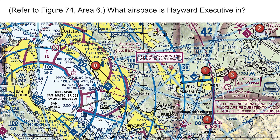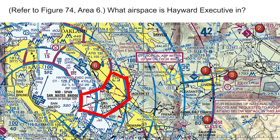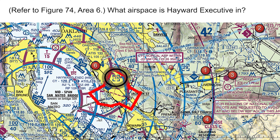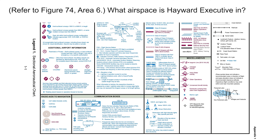First is Class B airspace, however its floor starts at 3000 feet MSL. The next is Class C airspace, but it starts at 1500 feet MSL and goes all the way to the bottom of the overlying Class B airspace — this is what the letter T denotes. And there is Class D airspace which starts at the surface and goes all the way to but not including 1500 feet MSL. We know this because this is how Class D airspace floors and ceilings are denoted per the legend.